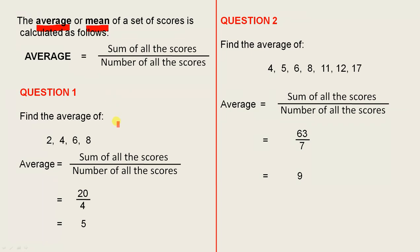Let's look at the first question. Find the average of 2, 4, 6, 8. So we saw earlier that the average was the sum of all the scores over the number of all the scores. Sum of all the scores means we add them all up: 8 plus 6 is 14, plus 4 is 18, plus 2 is 20. The number of all the scores - there are 4 scores altogether. So 20 divided by 4 equals 5. That is the average or the mean.